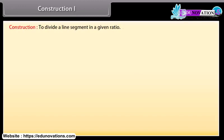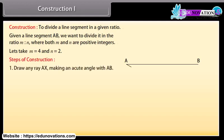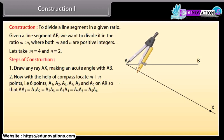To divide a line segment in a given ratio: given a line segment AB, we want to divide it in the ratio M is to N, where both M and N are positive integers. Let's take M as 4 and N as 2. Steps of construction: draw any ray AX making an acute angle with AB. Now with the help of a compass, locate M plus N points, that is 6 points — A1,